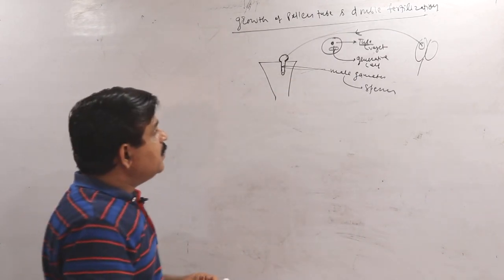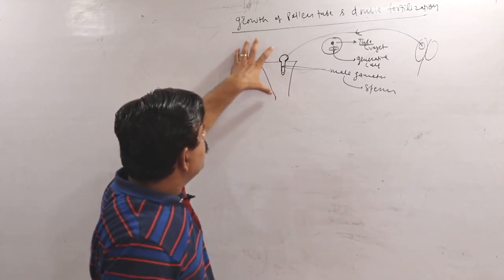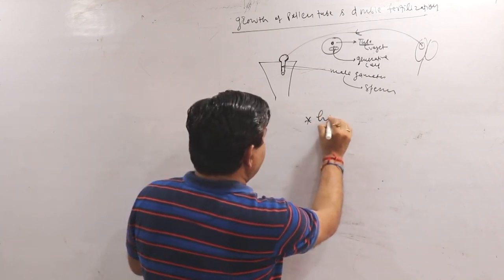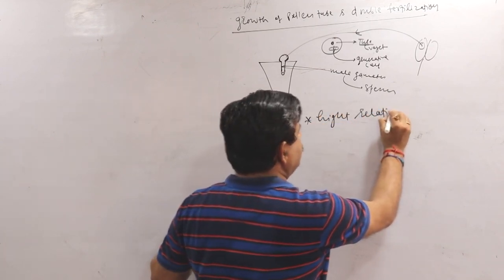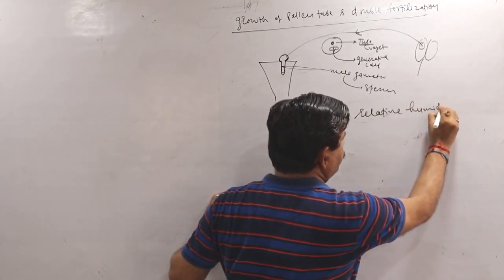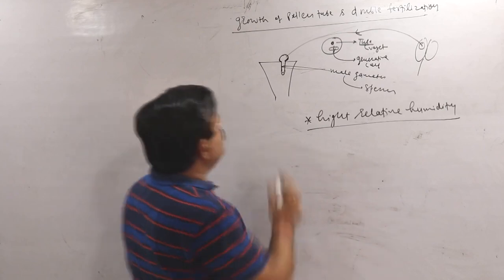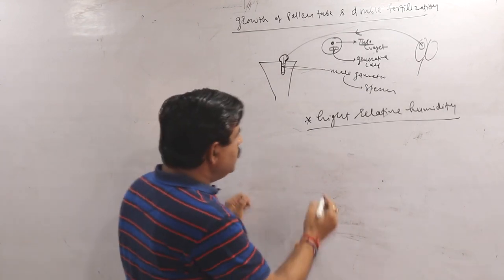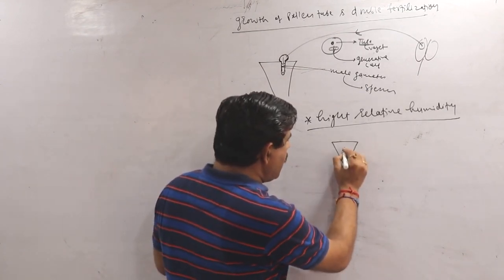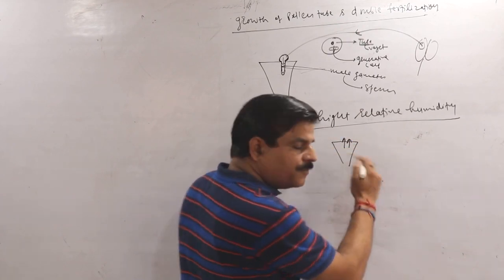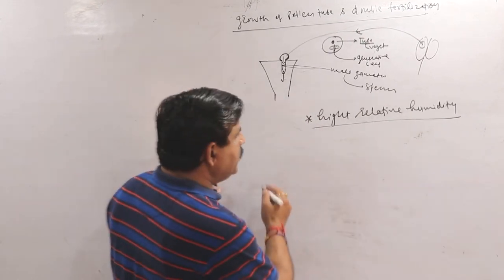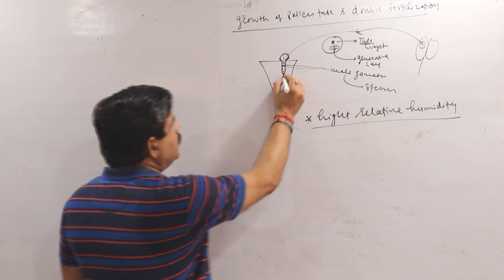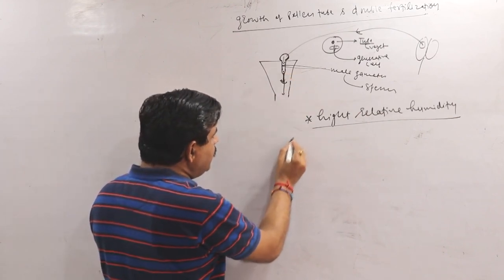What is the essential condition for pollen germination? High relative humidity is the essential condition for the germination of pollen grains. The stigma also secretes water and various nutrients. The pollen tube grows towards the embryo sac.